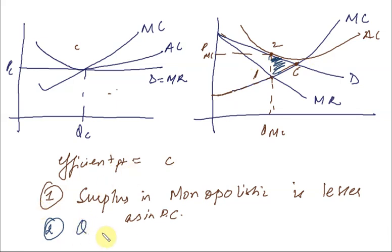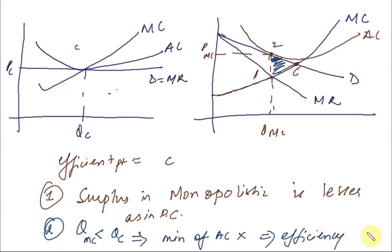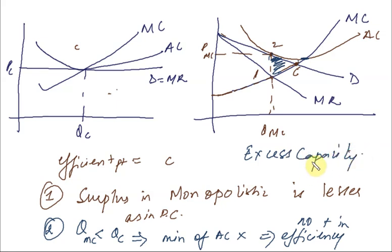Second, the quantity in monopolistic competition is lower than in perfect competition. Because of this, we do not operate at the minimum of AC. When we don't operate at the minimum of AC, efficiency is not achieved — because to achieve efficiency we need the minimum of AC, where we minimize cost per unit. In monopolistic competition, we stop before reaching the minimum of AC, so excess capacity arises, preventing us from reaching the minimum of AC.